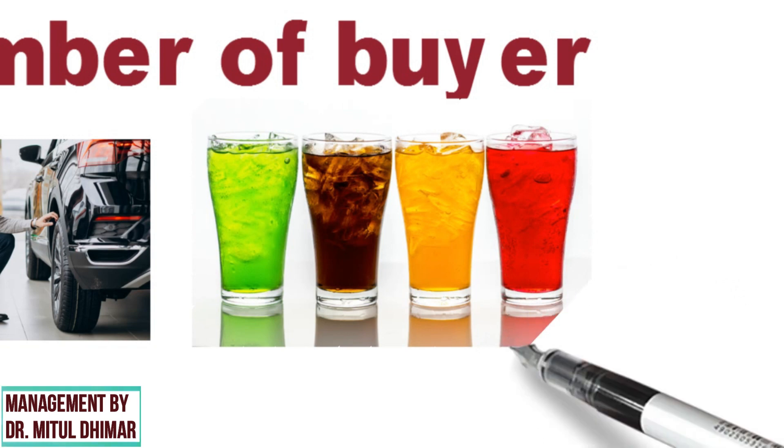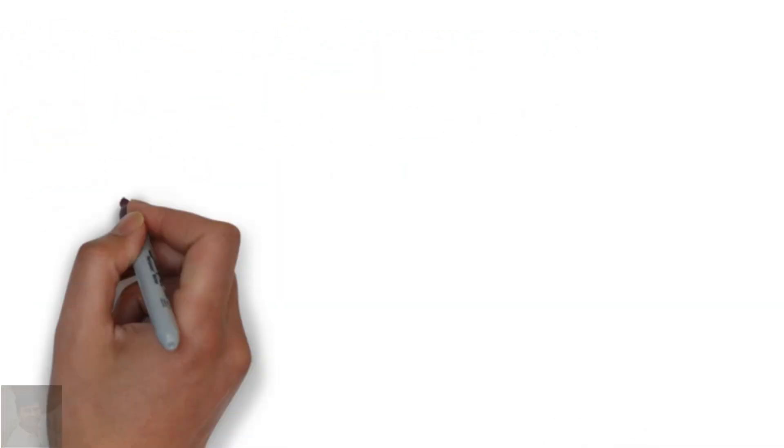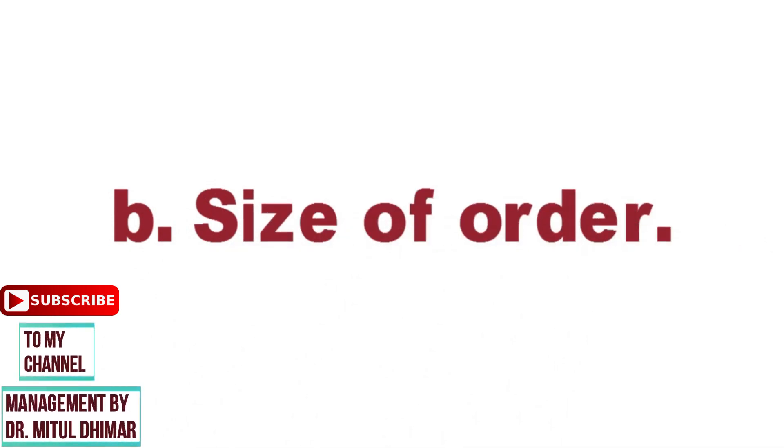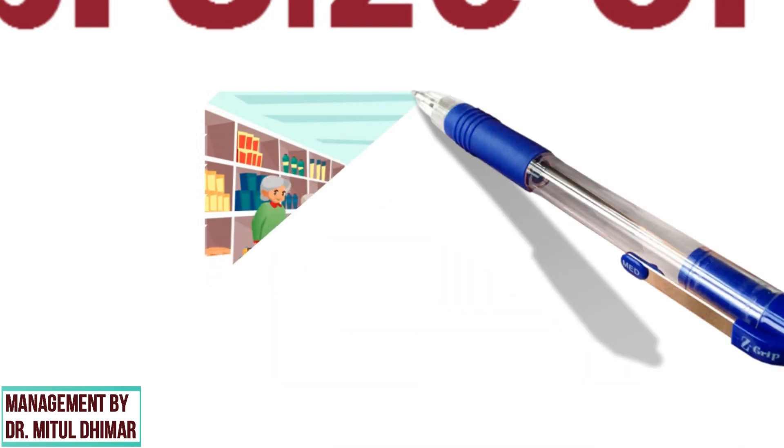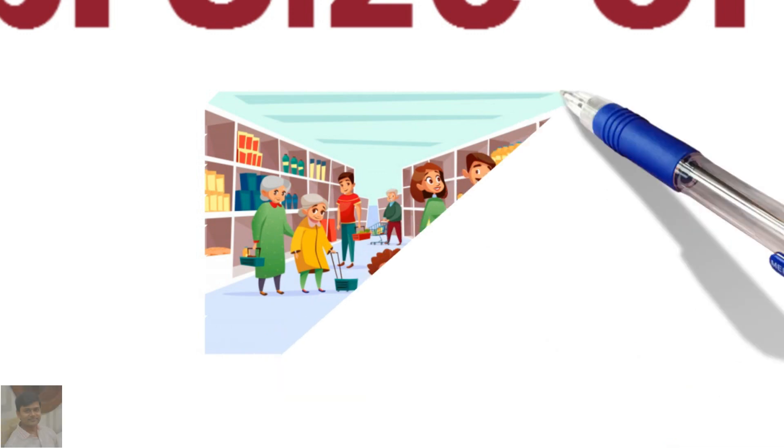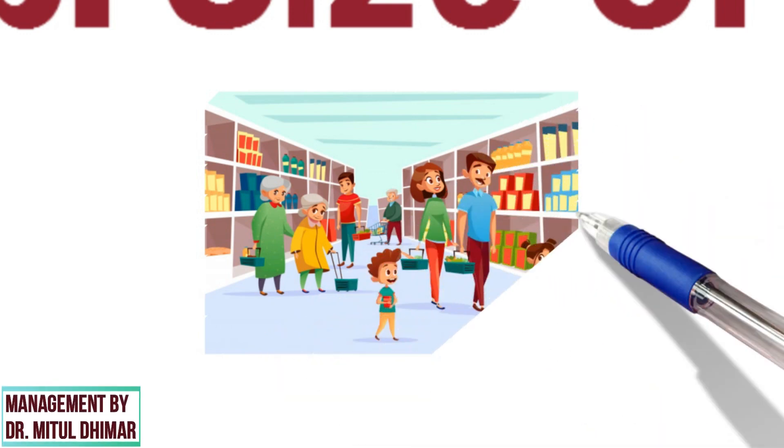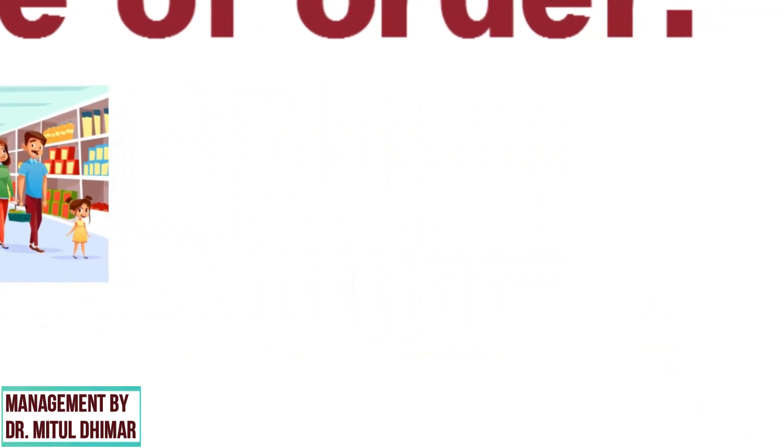For example, in selling cold drinks, many intermediaries are required. Number two, size of order. When orders for bulk supplies are received from consumers, the producer himself assumes responsibility for the supply of those goods. For example, majority of big retail malls like Walmart give bulk order to manufacturer directly.